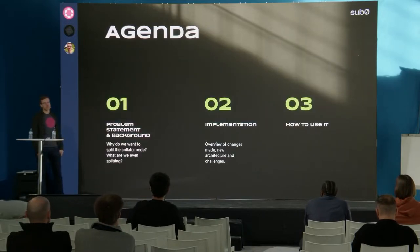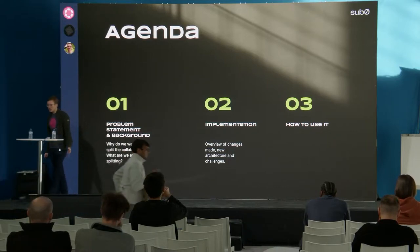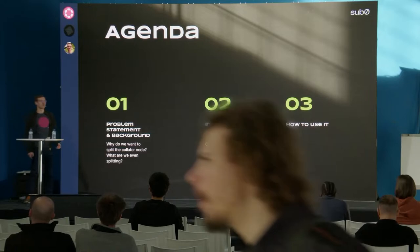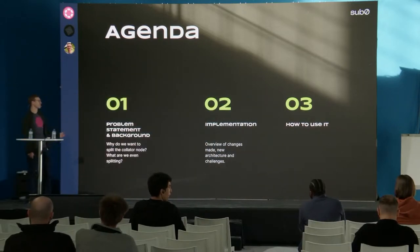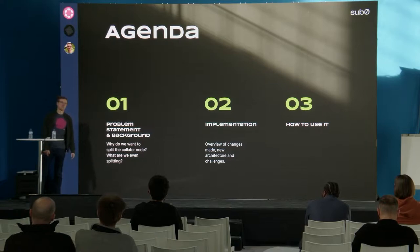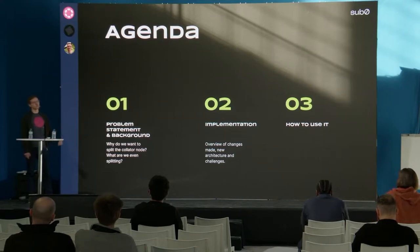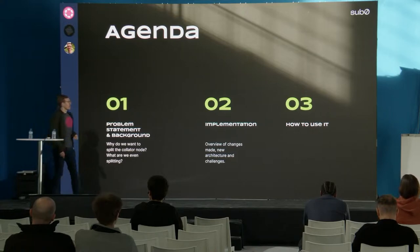Today we will talk about a few different things. First, we will talk about what the collator is and what we actually want to split — we want to divorce the relay and the parachain node inside of the collator, so what does that even mean? Then we will discuss the implementation, the road towards the split and considerations. Finally, we will look at how you can benefit from this and how to use the result.